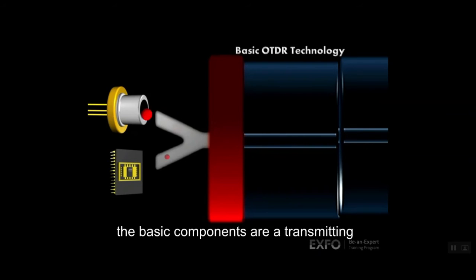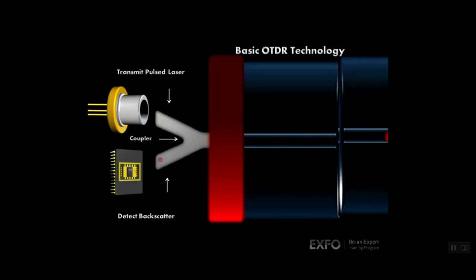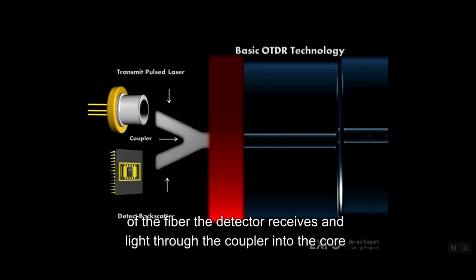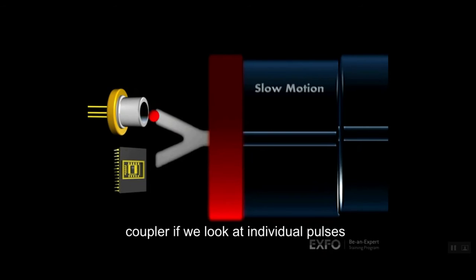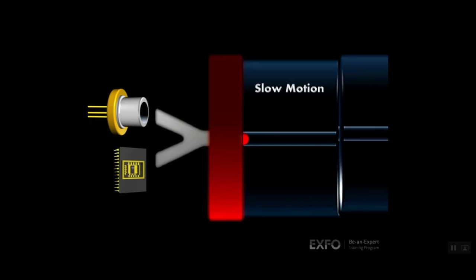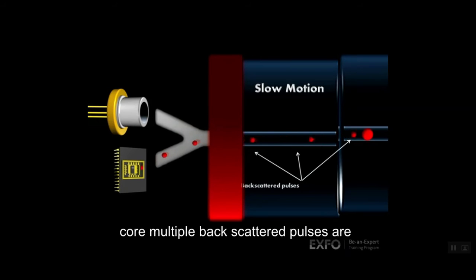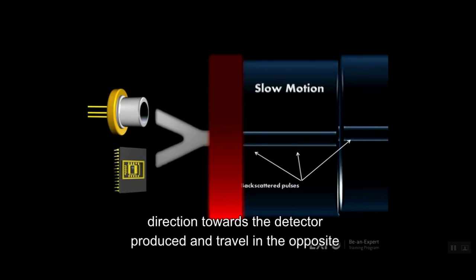The basic components are a transmitting laser, an optical coupler, and a receiving photo detector. The transmitter pulses light through the coupler into the core of the fiber. The detector receives and measures light returning through the coupler. Looking at individual pulses in slow motion, as the OTDR generates one pulse down the fiber core, multiple backscattered pulses are produced and travel in the opposite direction towards the detector.